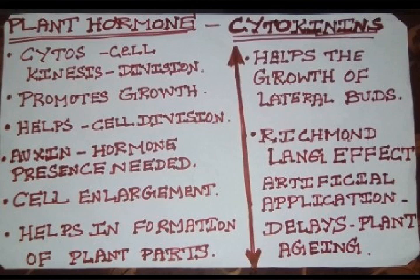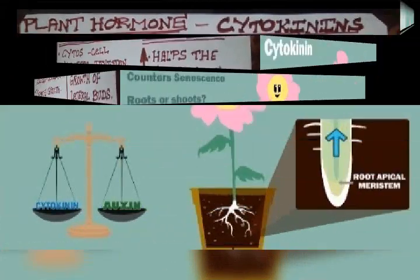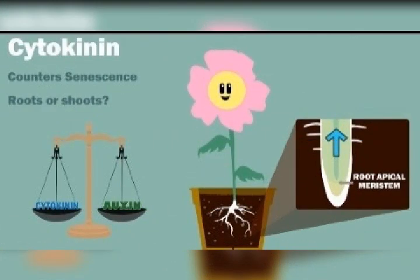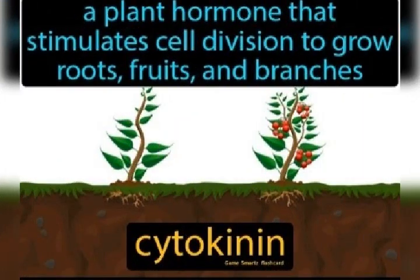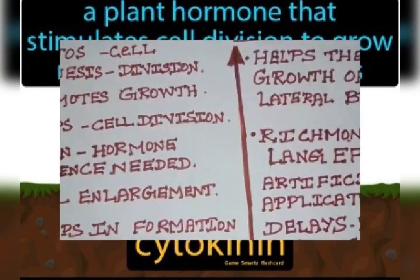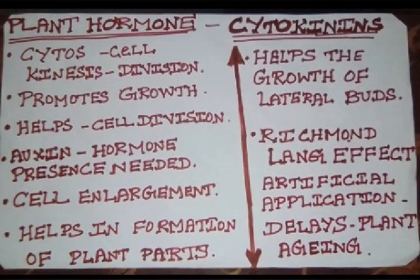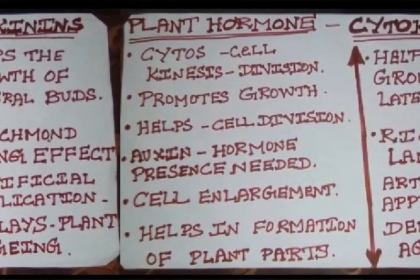Cytokinin is the plant hormone which helps in the growth of the plant. 'Cytos' means cell, 'kinesis' means division. So this hormone cytokinin helps in cell division in the plant body and it promotes the growth of the plant.